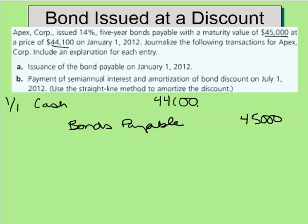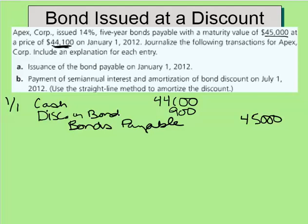Now, if you can see here, my debits do not equal my credits. In this case, that bond was issued at a discount because it was issued at lower than face value. So we have a $900 discount on bonds payable — just the difference between the $45,000 and the $44,100.